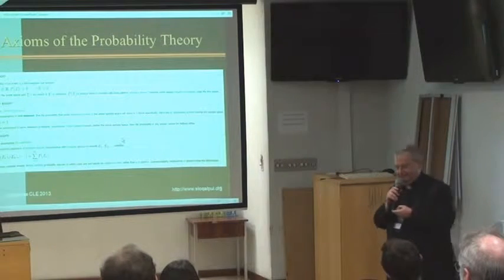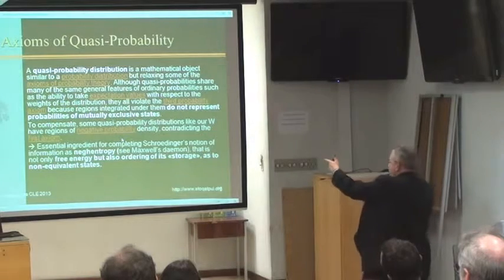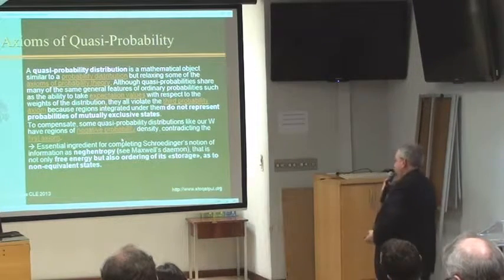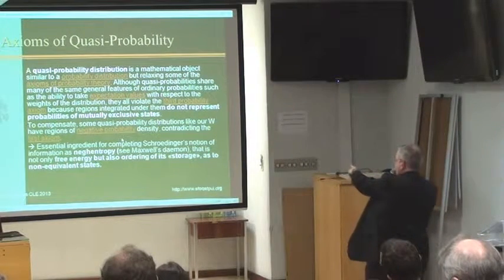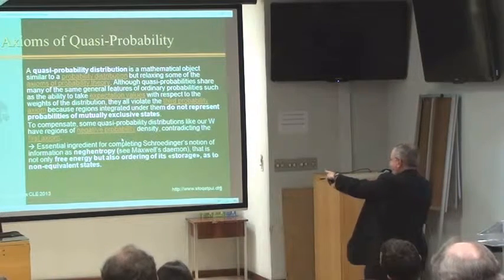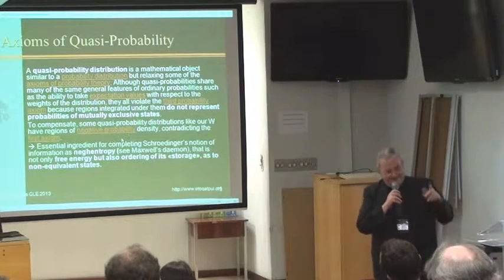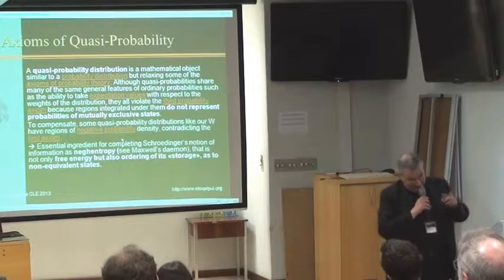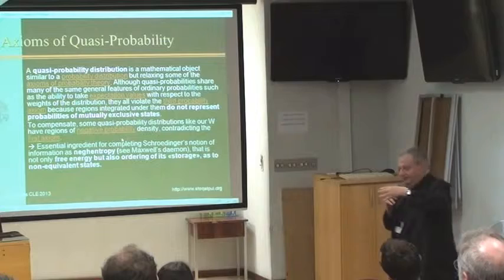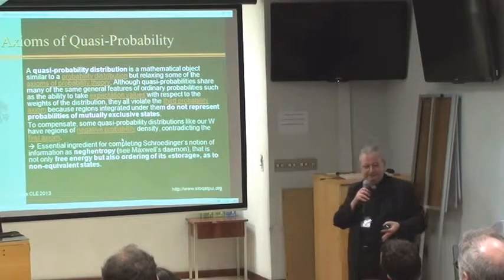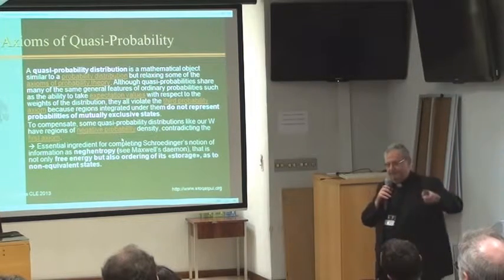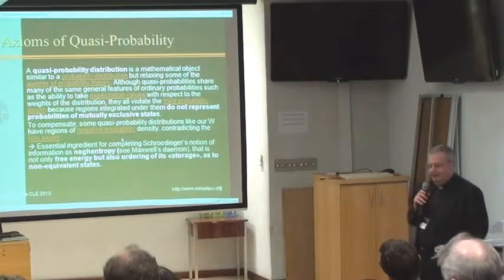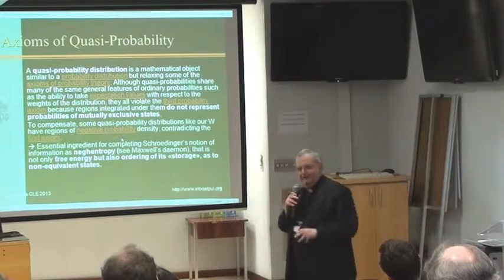This is the solution of the problem of reference. The quasi-probability distribution is a mathematical object similar to a probability distribution but relaxing the first and third axioms. It is an essential ingredient for completing Schrödinger's notion of information as negentropy — that is, not only free energy, but negentropy is aligned with ordering of its storage as two non-equivalent states. The notion of Schrödinger's negentropy is not only free energy; it is necessary also ordering for having information. Information is not only free energy — this is true only if you are in the linear approach in which energy and information are superpositive and absolutely equivalent and reciprocally interchangeable.